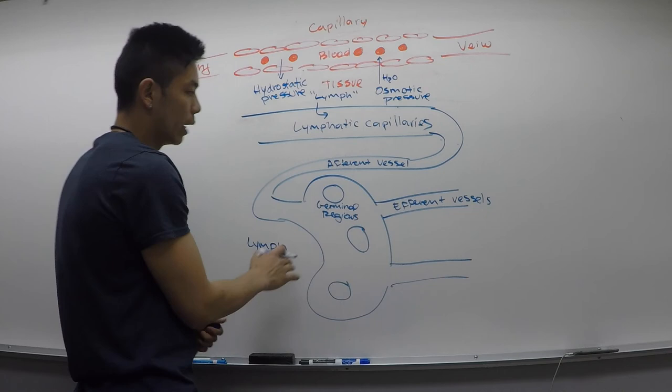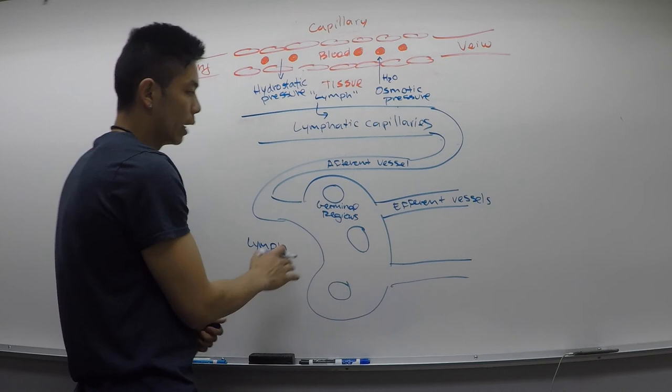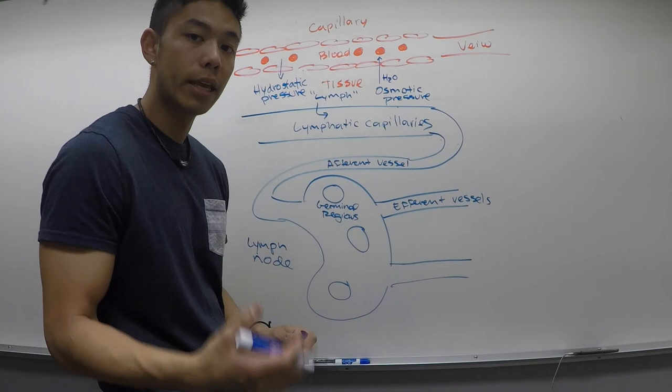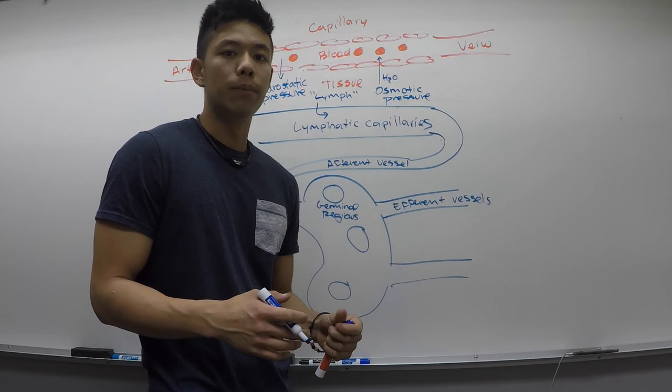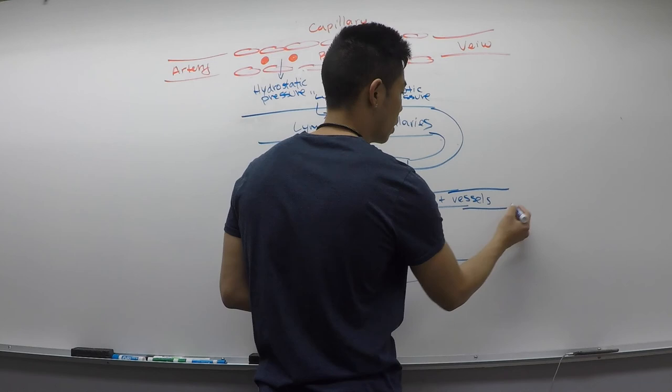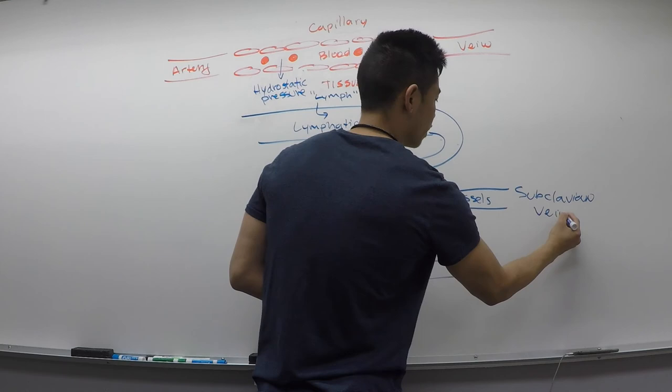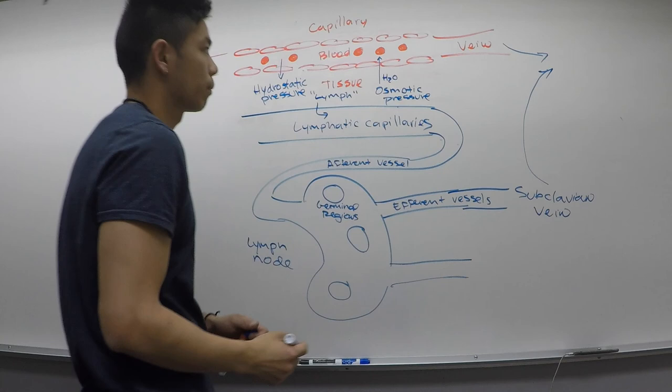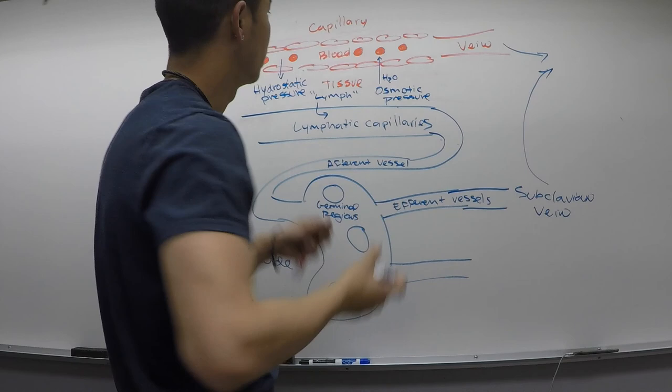Once we filter through our lymph, it returns to the efferent vessels. The efferent vessel takes the lymph that has already been filtered — think of it like purified water. You take this purified lymph back to our vein, specifically something known as the subclavian vein, which reconnects to our vein. That way, we can take the lymph that is not infected and rejoin it with our blood. This is basically how the lymph node works and how we filter our blood through our lymphatic capillaries.